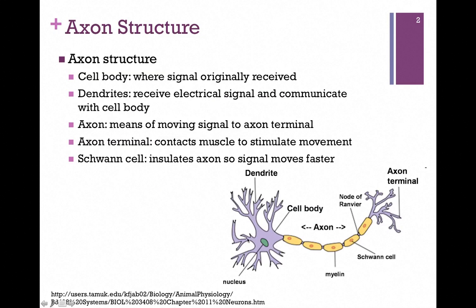Here we have the cell body of the neuron — this is where the signal is originally received. We have finger-like projections called dendrites that receive the electrical signal and communicate with the cell body. The axon is this long area of the cell; it is the means of moving the signal from the cell body to the axon terminal, and it is the terminal that contacts the muscle to stimulate movement.